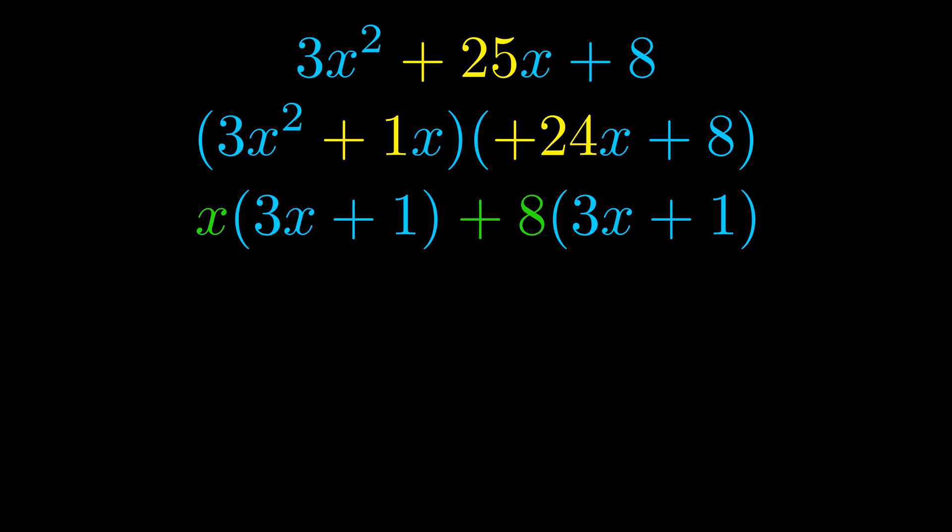Notice also how what remains inside of the parentheses is the same in both cases. The blue values are the same. Those blue values will become one of our factors and we will combine the two green values, the GCFs that we pulled out, to get the other one. And that is our fully factored equation.